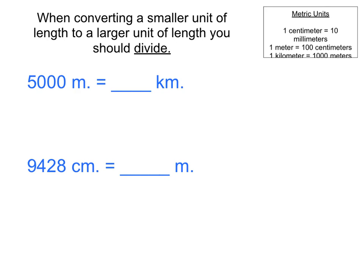Here we have 5,000 meters equals some number of kilometers. Meters is a smaller unit of length compared to kilometers. So we're going to need to divide to get our final answer. I'm going to be dividing by the number of meters in a kilometer, which is 1,000. So 5,000 divided by 1,000 equals 5 kilometers.